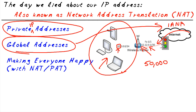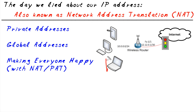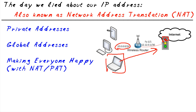So why do we need to lie about our IP addresses? Consider this: let's take this PC right here — this PC wants to go out to the internet. As it sends packets out to the internet, its source IP address is going to be from the 10 network. And the service provider says we don't allow any private addresses on the internet, because it'd be confusing. Private addresses have to stay private — they're not allowed on the internet. Bob is a client who wants to go to the internet. What do we do? We lie. That's why I called it the day we lied about our IP address.